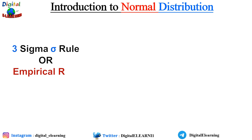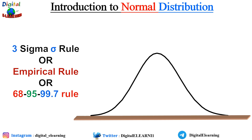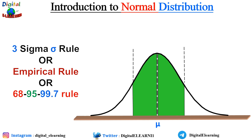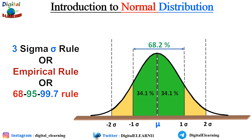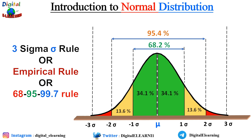This is the 3-sigma rule, also called the empirical rule or the 68-95-99 rule. It states that almost all observed data will fall within three standard deviations (sigma) of the mean (mu). Specifically, 68% of the population is within plus or minus one sigma — that is 34.1% on each side of the mean. Within plus or minus two sigma, 95.4% of the population falls. And within plus or minus three sigma, 99.7% of the population falls.